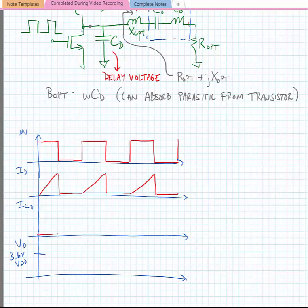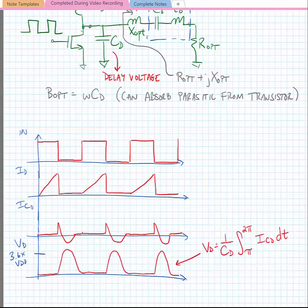When we turn the transistor off, we'll get a current that flows in the capacitor, and ideally if our pulse shaping network is done appropriately, we will get a waveform at the drain voltage that's shaped as follows. So our drain voltage waveform is equal to 1 over CD times the integral from pi to 2 pi of that current waveform that's flowing into the capacitor.